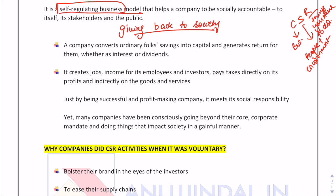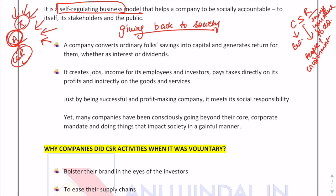CSR is a self-regulating business model. If a company is doing well, it invests in CSR activities. Consider company A — if it is investing in CSR activities, it is ethically and socially responsible and takes care of the environment. Investors nowadays are very much concerned about the company they are investing in; they prefer a socially responsible company. So investors will get attracted to company A.